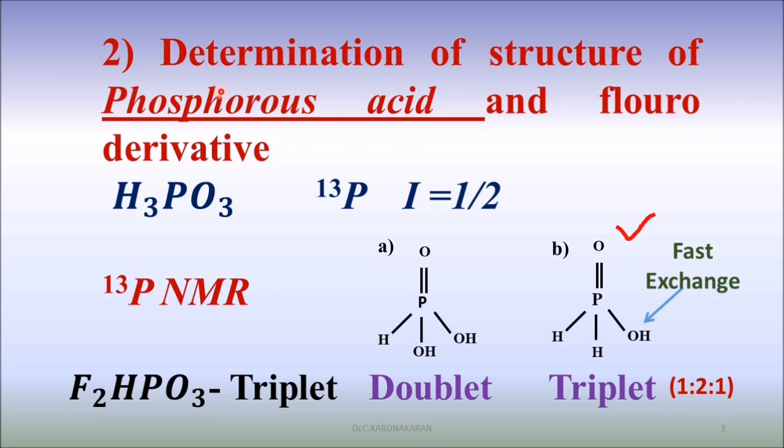The structure of phosphorous acid is elucidated by using phosphorus NMR. The formula of phosphorous acid is H3PO3. There are two possible structures I have given here.